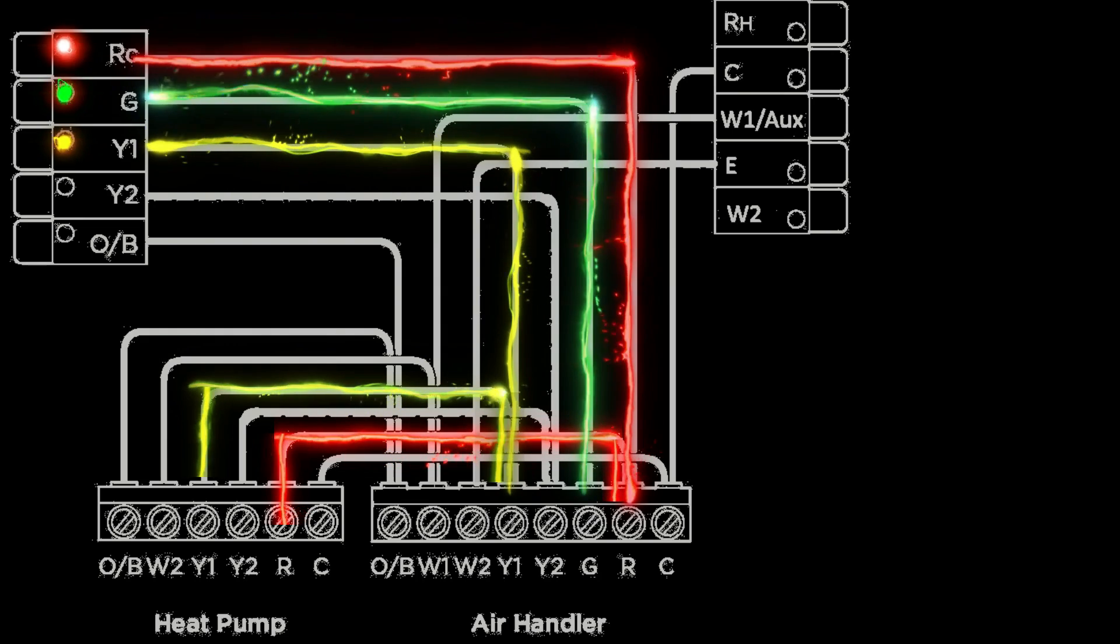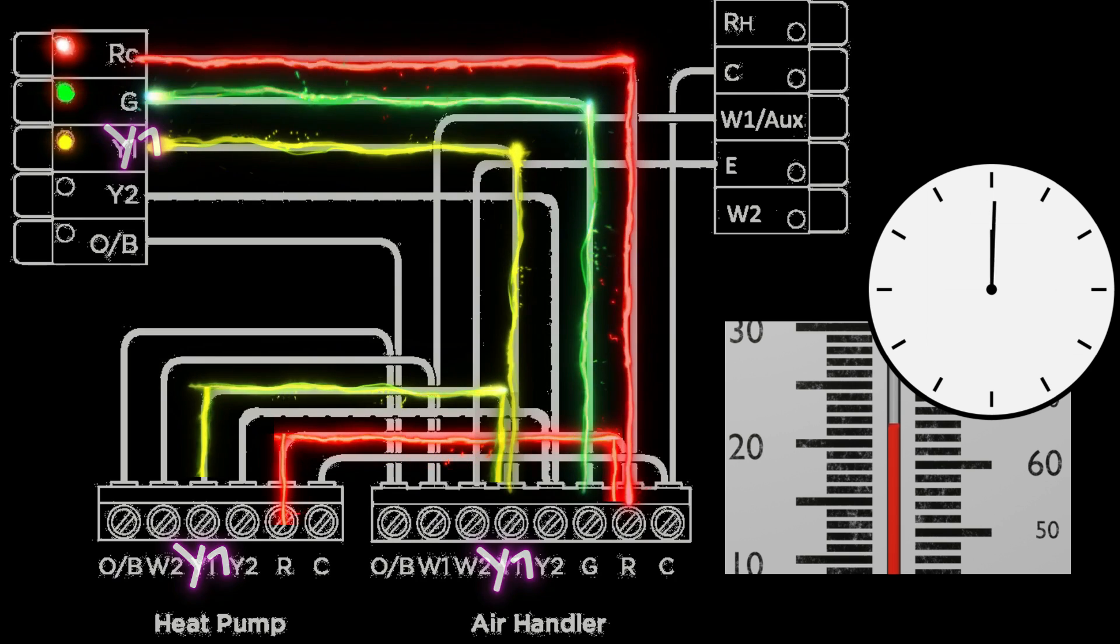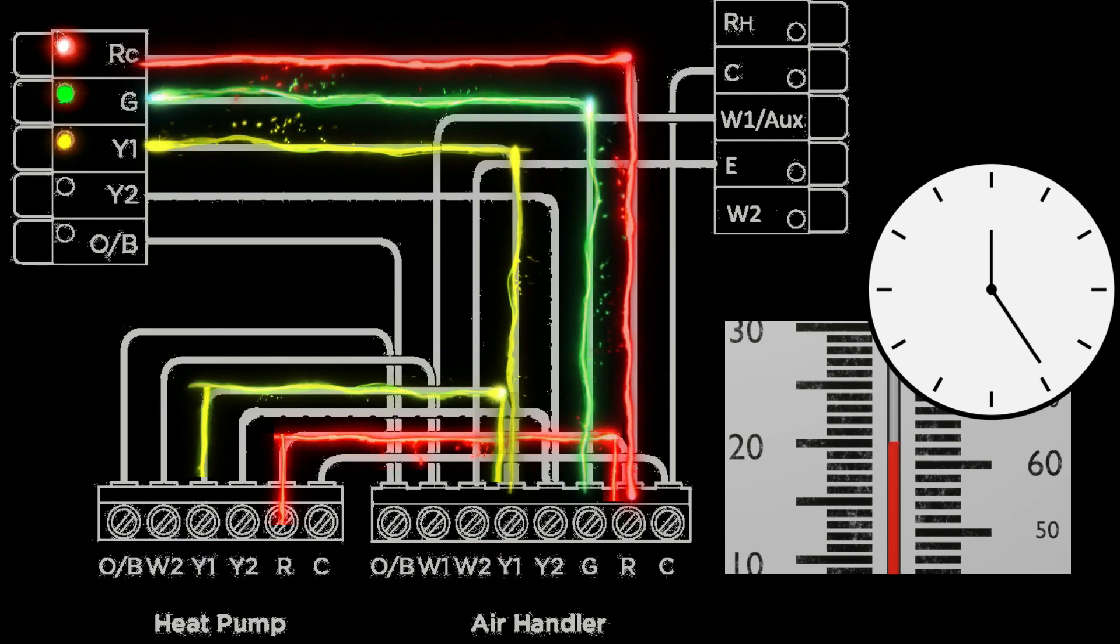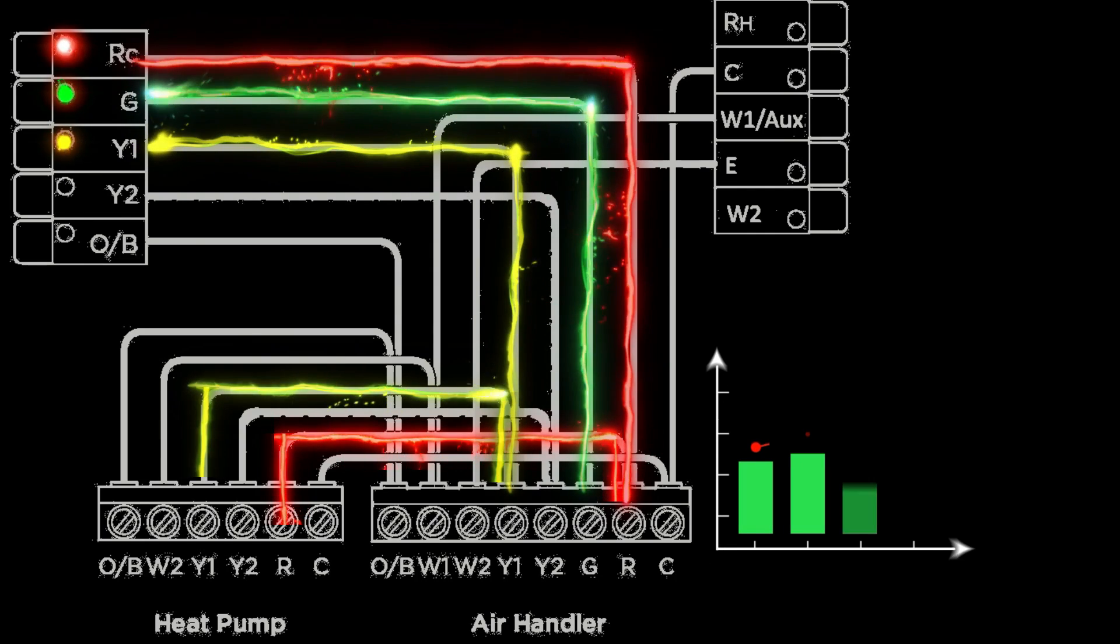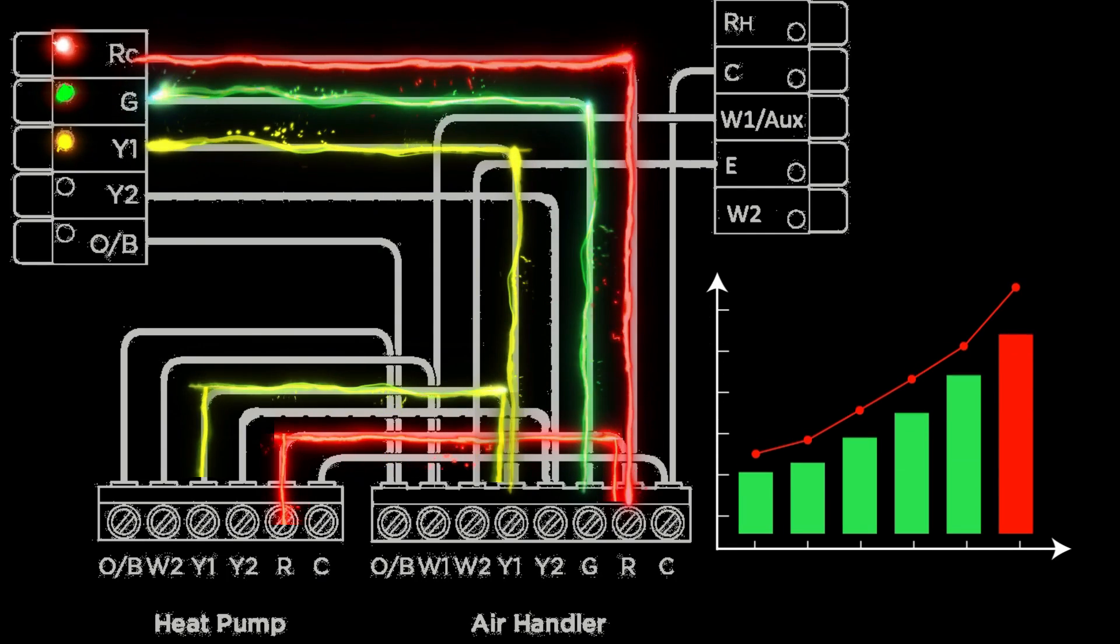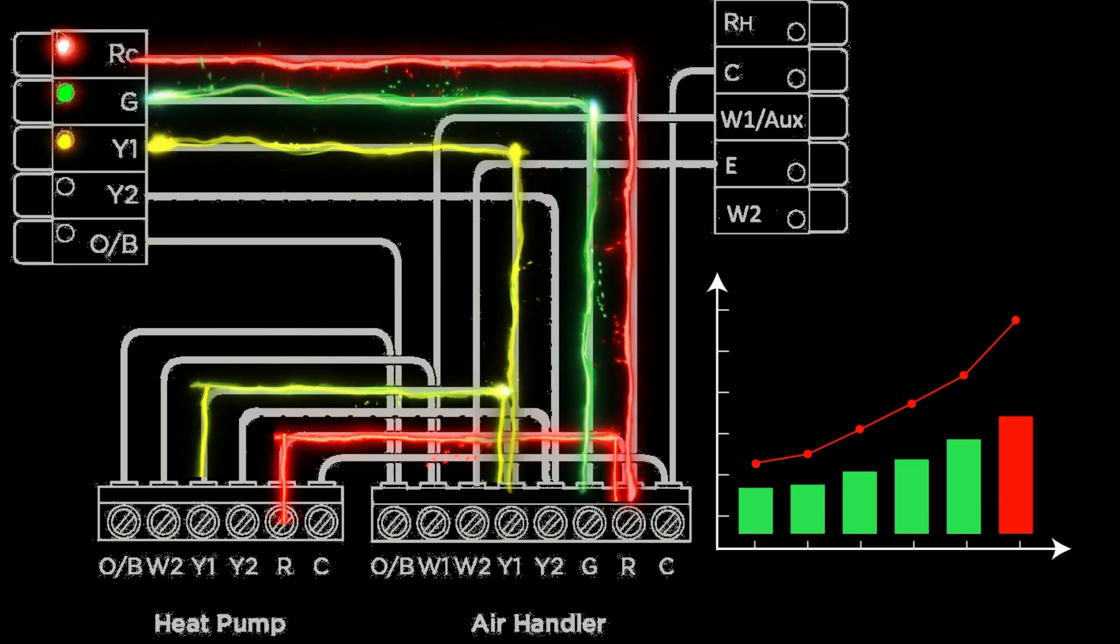So basically what a smart thermostat will do is it will record the temperature every minute and begin plotting these temperatures on a graph. And if the temperature stays within that one degree differential it will continue to maintain first stage.